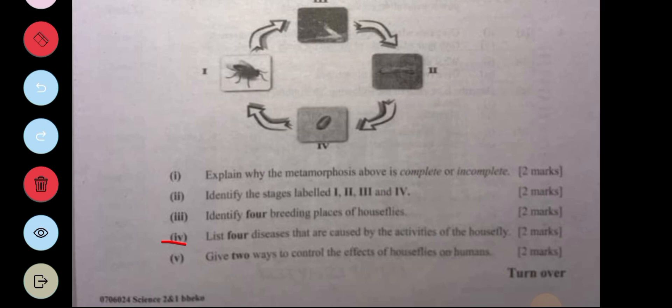Give two ways to control the effects of houseflies on humans. We need to ensure proper waste disposal and good animal waste management. We can also use fly traps and insecticides.